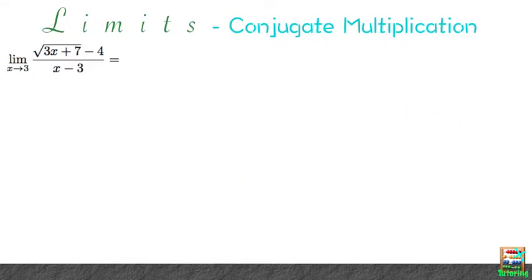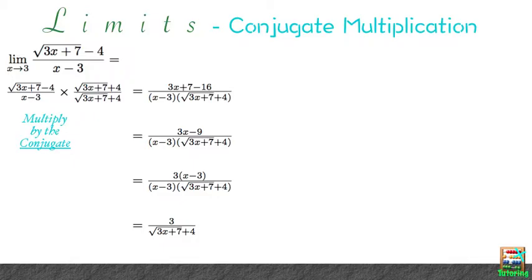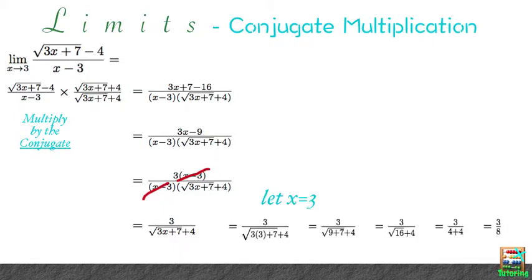Did you find that reducing the numerator further will give you 3 times x minus 3? And that cancels with x minus 3 in the denominator. All you're left to do is plug in your x and solve the equation. And there's your solution.